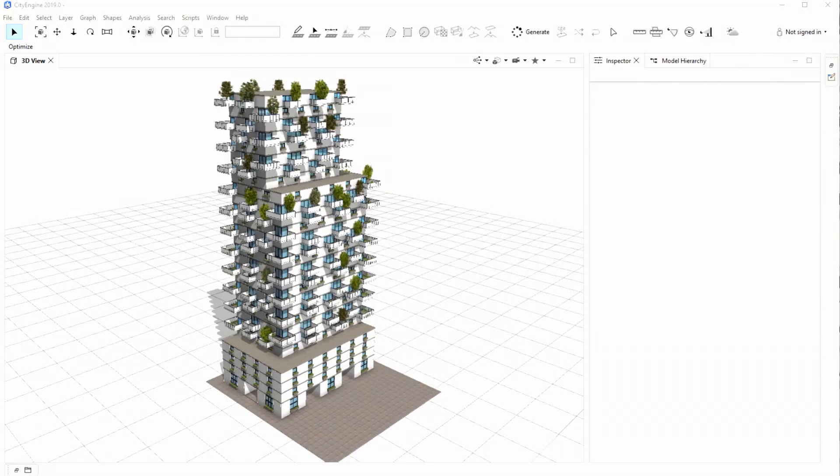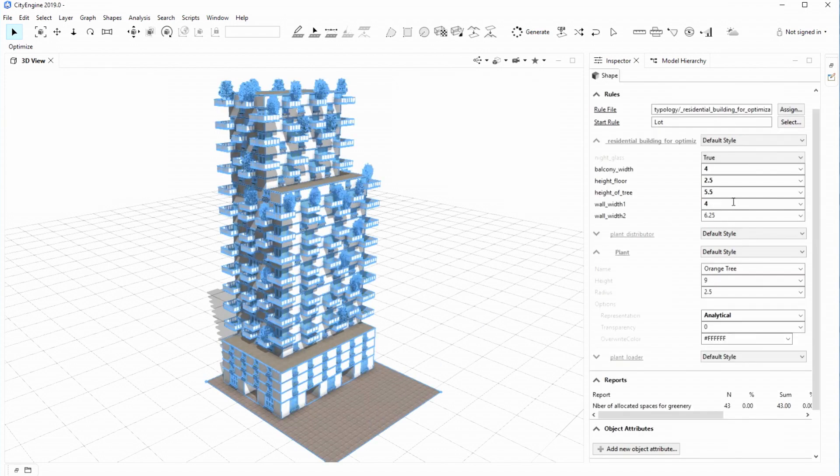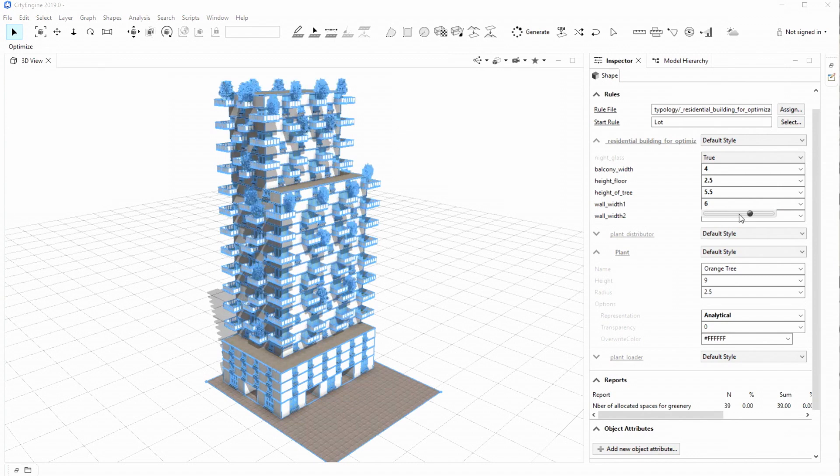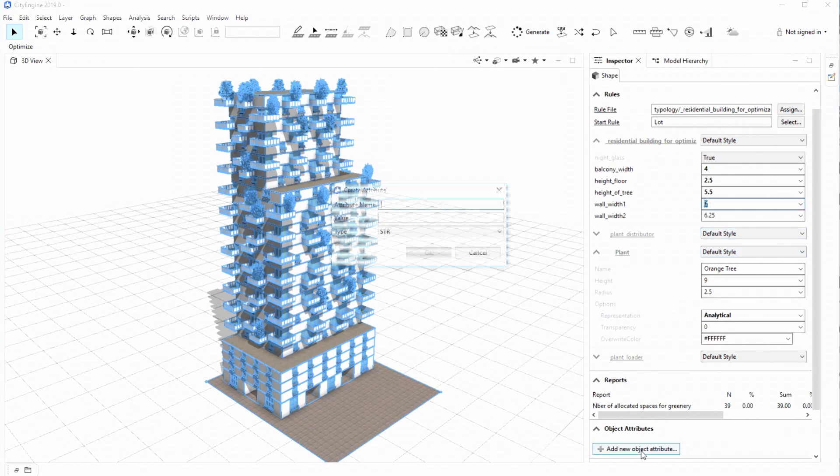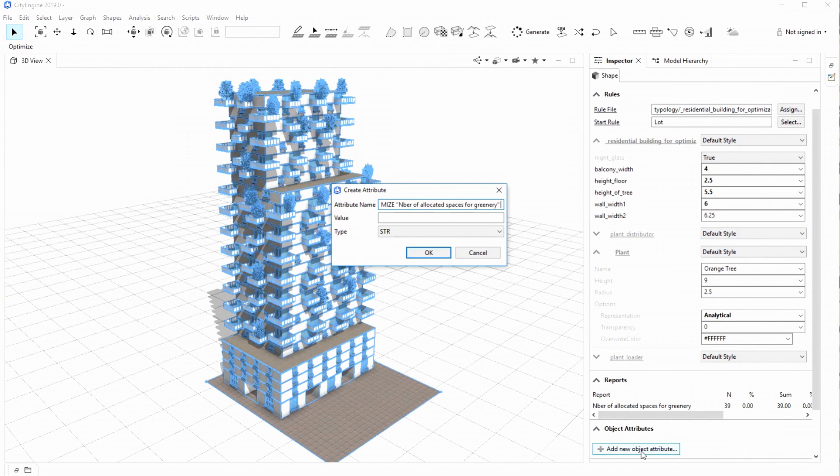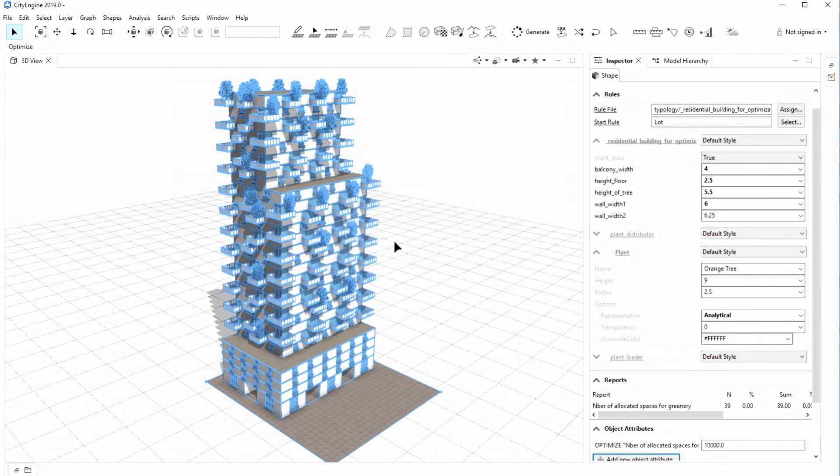As you certainly know, in CityEngine the 3D models are defined by their attributes. So by changing the attributes value, you modify the generated model. So now let's define our optimization goal: we want to maximize the number of allocated space for greenery in this case.